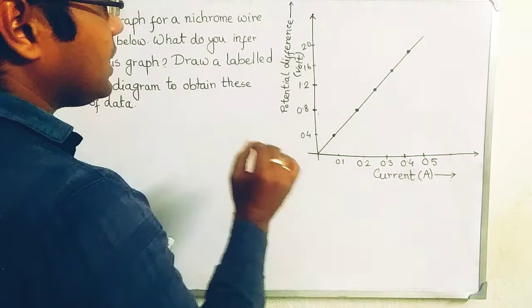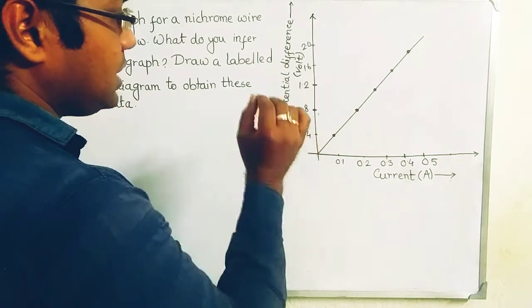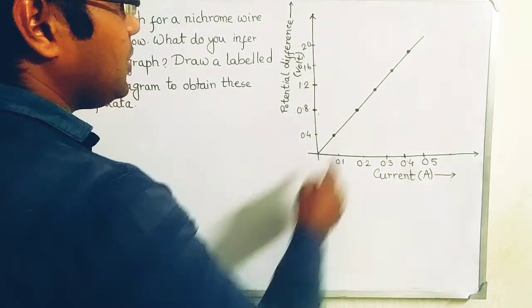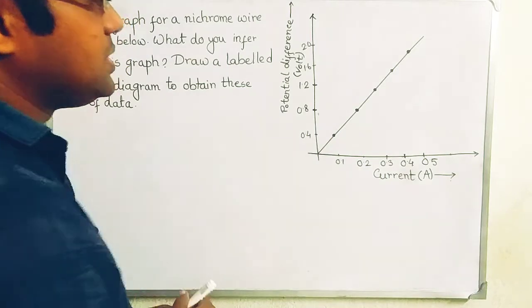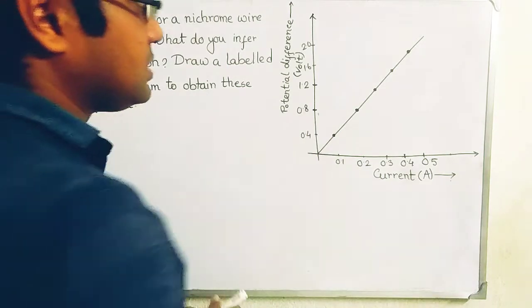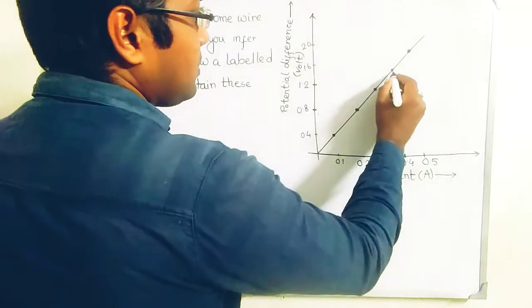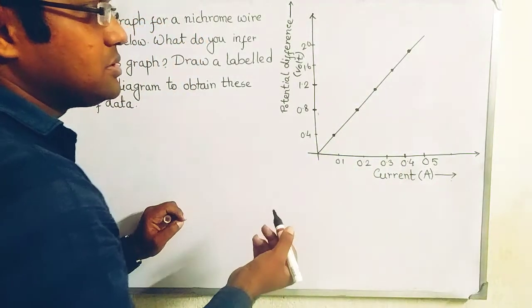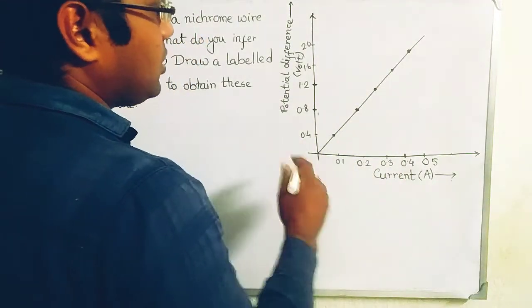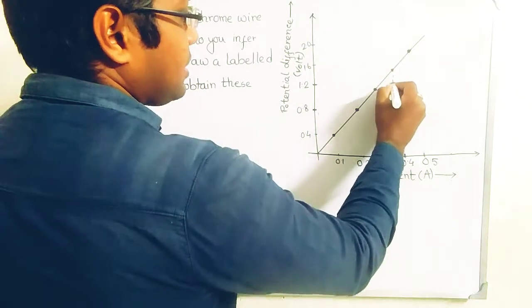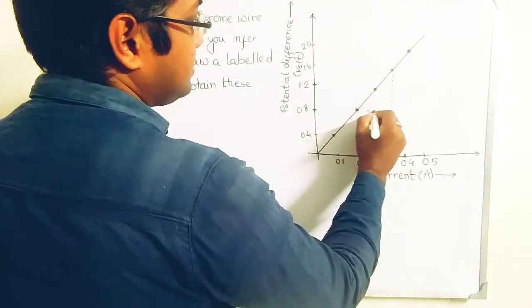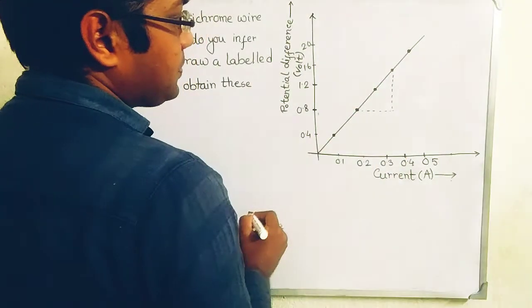Why? Because the slope of this curve basically gives you resistance. Let us calculate the slope. There are several procedures. I am choosing one of these. Let us draw a triangle.